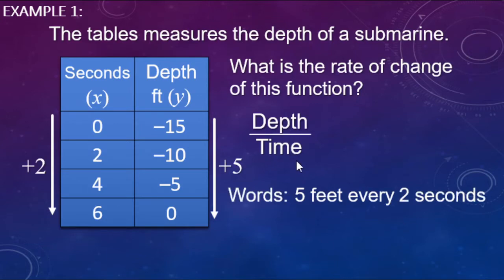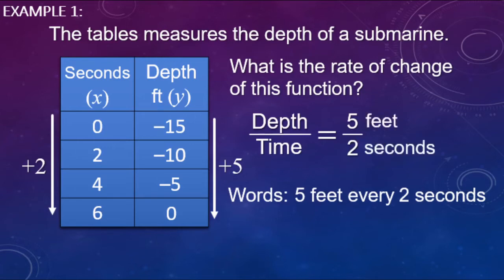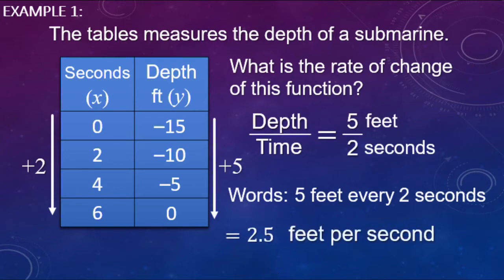So when we look at depth versus time, the depth is going up by 5 and the time is going by 2 seconds. There's our slope: 5 over 2. Our rate is 5 feet every 2 seconds. We can divide to get 2.5 feet per second. This is called the unit rate — 2.5 feet per one second.